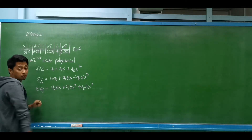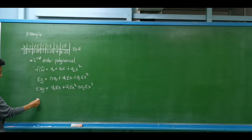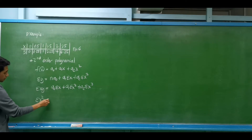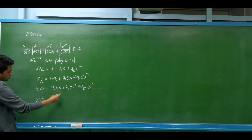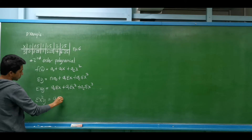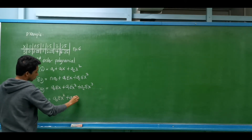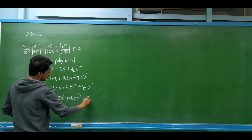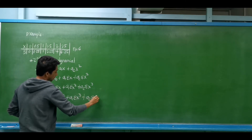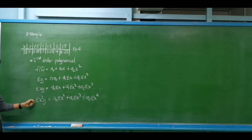The third equation is obtained by multiplying the second equation by summation of x: summation of x²y = a₀·(summation of x²) + a₁·(summation of x³) + a₂·(summation of x⁴). So these are our three equations.